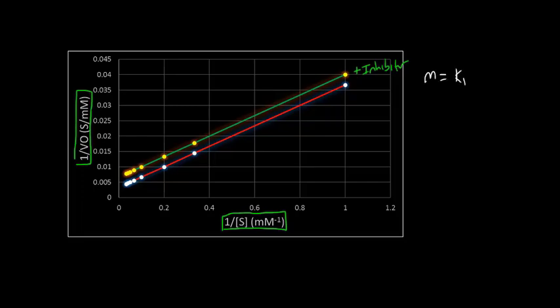And remember, the slope is equal to Km divided by Vmax. So the fact that we have equivalent slopes tells us that Km and Vmax are both changed by the same value. So overall, the ratio of Km over Vmax is the same.